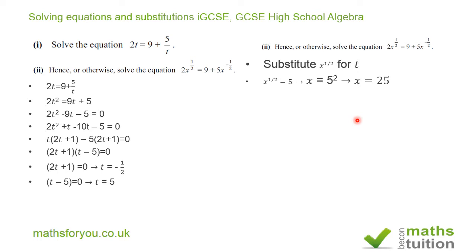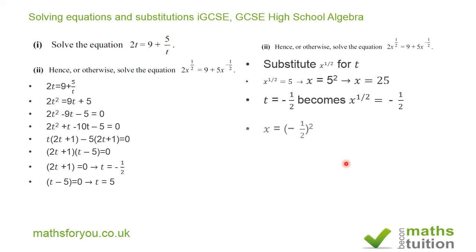If we square both sides we end up with x is equal to 5 squared, or x is equal to 25. Secondly, if t is equal to minus 1 half, then x to the power of 1 half is equal to minus 1 half. If we then square both sides, we end up with x is equal to minus 1 half squared, and minus 1 half squared is the same as a quarter, so x is 1 quarter.